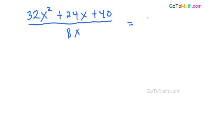So 8 goes into 32, 4 times. And then 24, 3 times. And then 40, 10 times. And that's going to be all over x. See that?